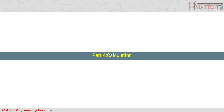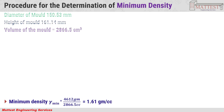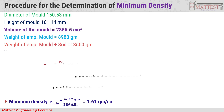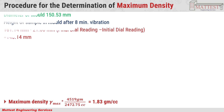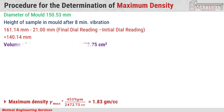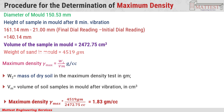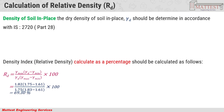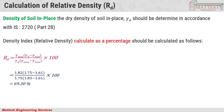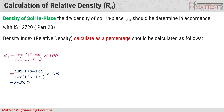Part 4 - Calculation of Relative Density. Step 1: Determination of minimum density of cohesionless soil. Step 2: Determination of maximum density of cohesionless soil. Then determine the in-situ density of soil using IS 2720 Part 28. The density index or relative density is then calculated as a percentage using the relevant equation. The final relative density of cohesionless soil calculated is 69.30%.